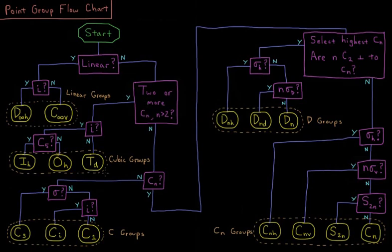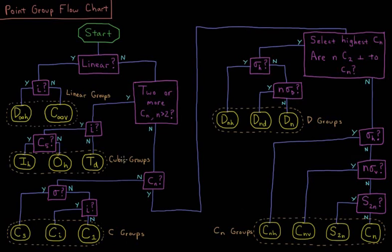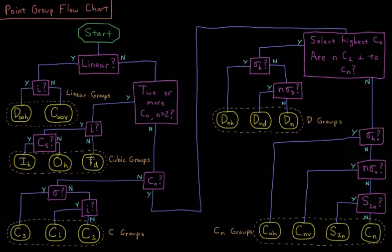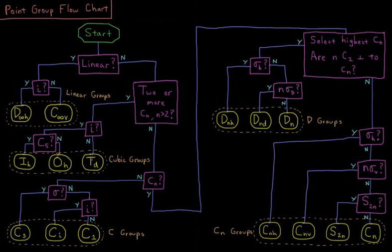then we break down into this set of groups, which are the cubic groups, the special case high symmetry groups. If that ends up being a C3 principal axis with multiple C3s, that's a TD. If it ends up having multiple C4s, it'll be OH octahedral. If they end up being C5s, it'll be icosahedral.